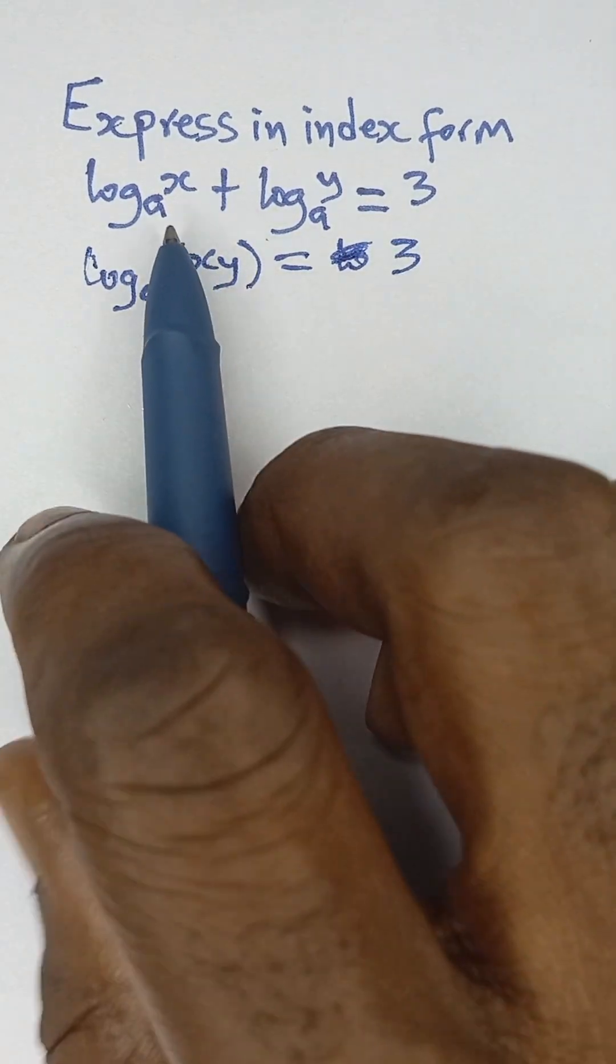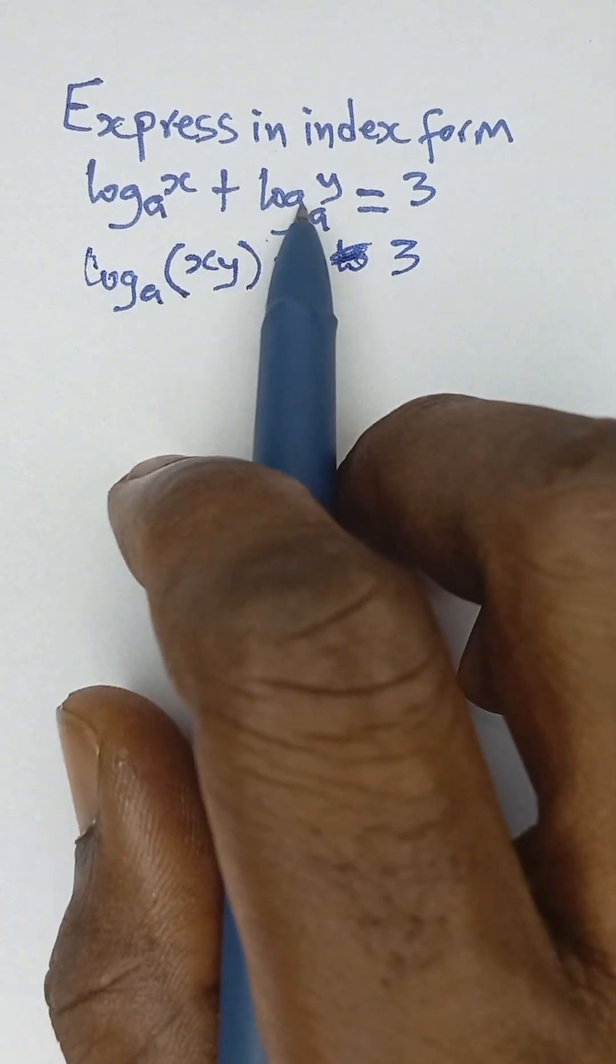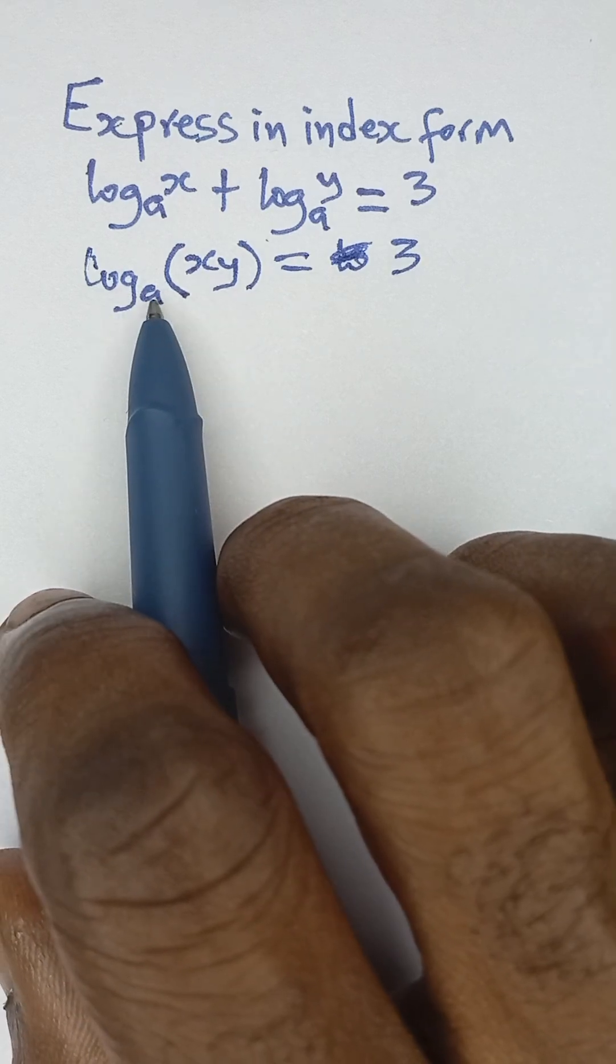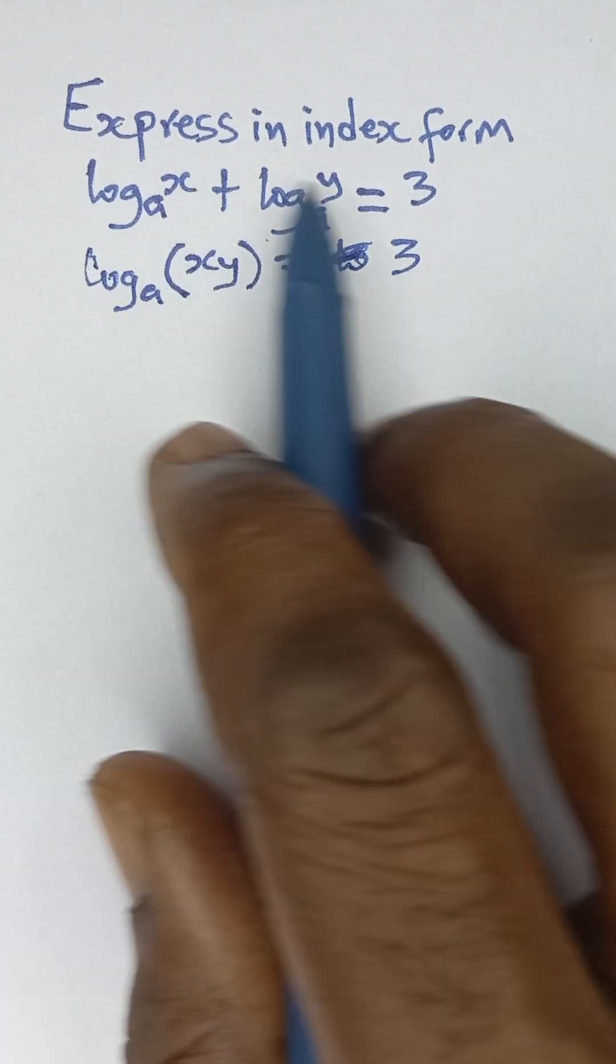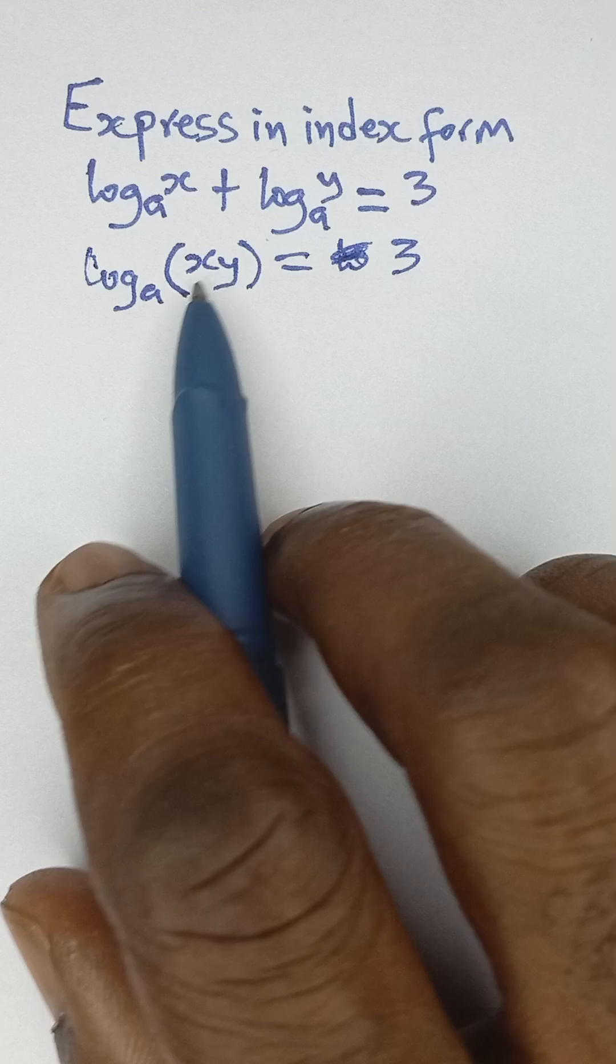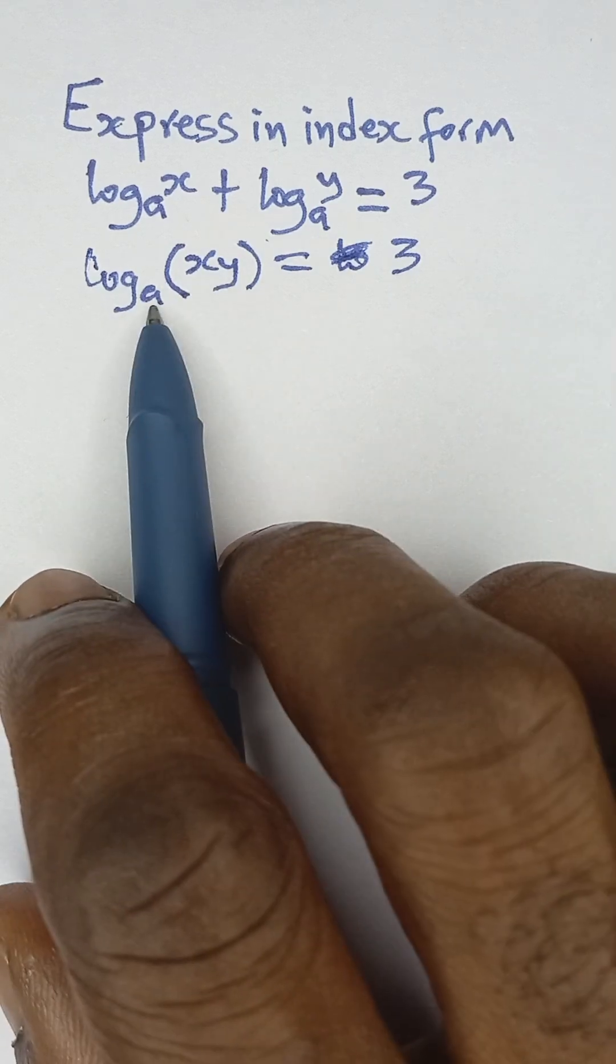When you have addition of logarithm like this, you simply take the logarithm to that base and then you multiply the terms there. So that will be log x y to the base a is equal to three.